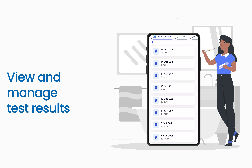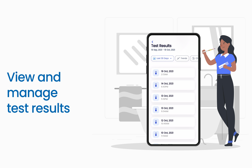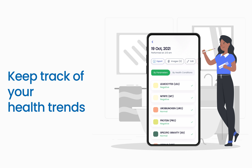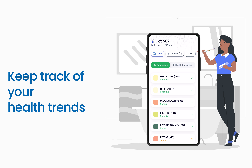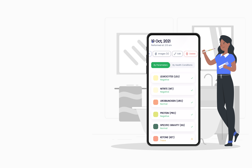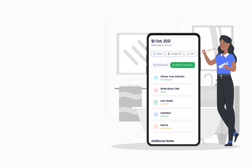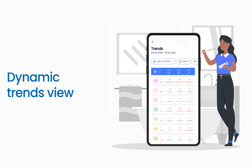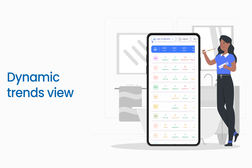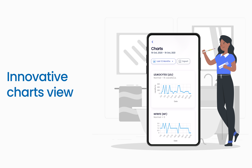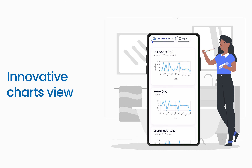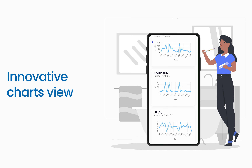View and manage your test results like a pro. The Uranox app provides innovative views to keep track of your health trends. View results specific to each parameter or according to health conditions. The dynamic trends view provides a quick review of your results and progress over time. The charts view is another productive way to analyze the trends.